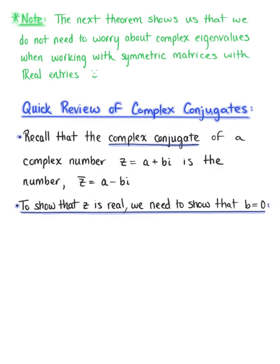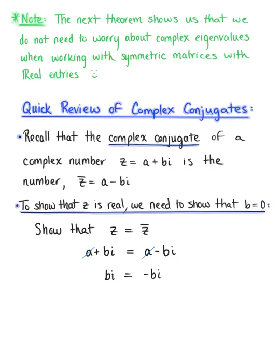There are multiple ways in which we could go about this. One such way is to show that our complex number z is equal to its complex conjugate. So we have a plus bi equal to a minus bi. The a's cancel, leaving us with bi equal to minus bi, or 2bi equal to zero. Dividing both sides by 2i, we are left with b equal to zero.